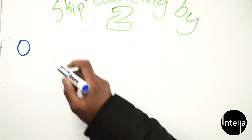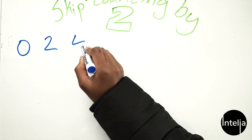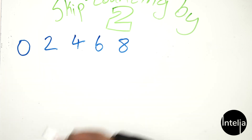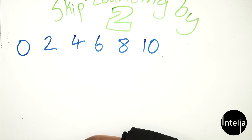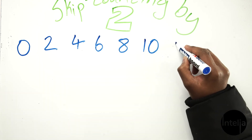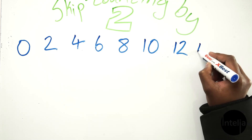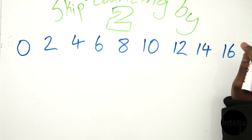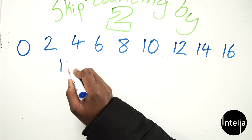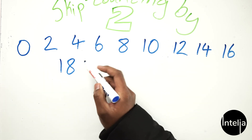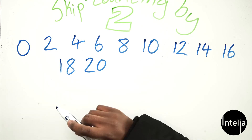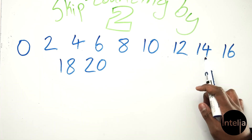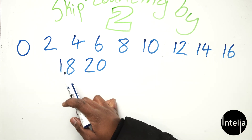If you remember them, it's zero, two, four, six, eight, ten. Well done! Now let's continue: twelve, fourteen, sixteen, eighteen, and what's next? Twenty! Yes. So it's zero, two, four, six, eight, ten, twelve, fourteen, sixteen, eighteen, twenty. One last time: zero, two, four, six, eight, ten, twelve, fourteen, sixteen, eighteen, and twenty.